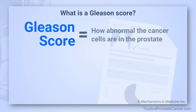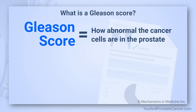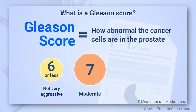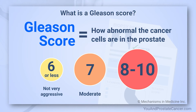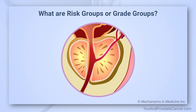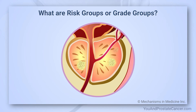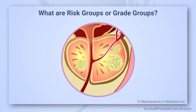Gleason scores almost always range from six to ten, with six being the lowest grade cancer. A Gleason score of six is low grade, seven is intermediate grade, and eight to ten is high grade cancer. But one of the issues with this scoring system is that patients didn't understand what it meant in terms of their risk.